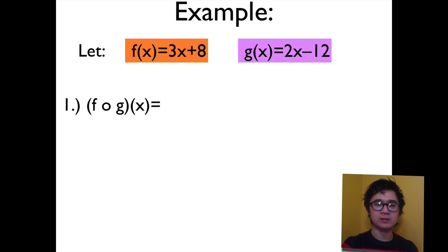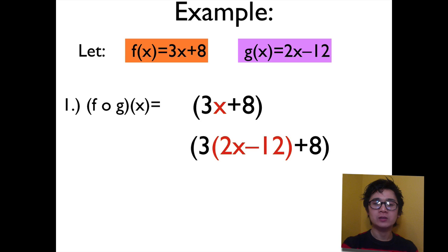Evaluating f of g of x, we simply look at the first letter of the composition of function and in this case the first letter is f. So we will be using the function f and replace the value of x of function f by the function g. So therefore the x in 3x plus 8 will be changed into 2x minus 12.